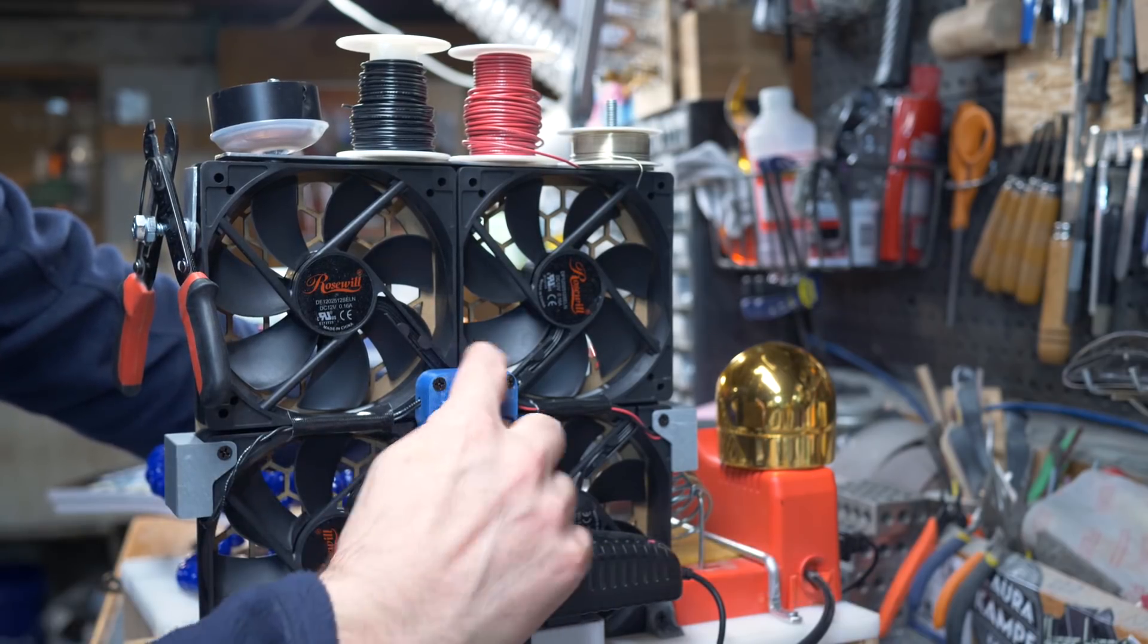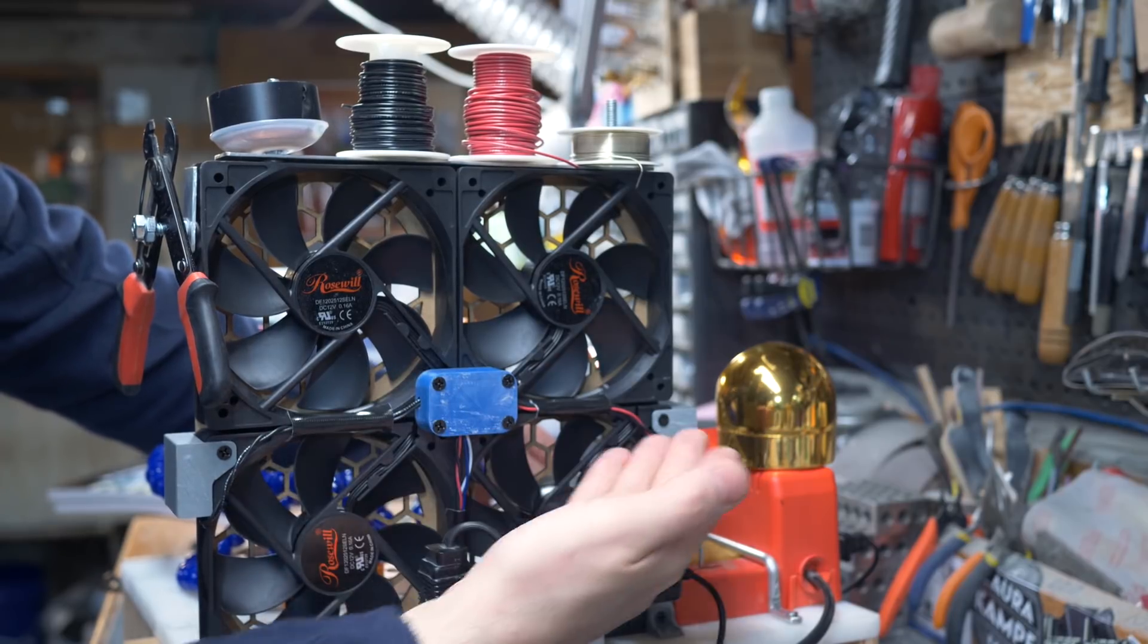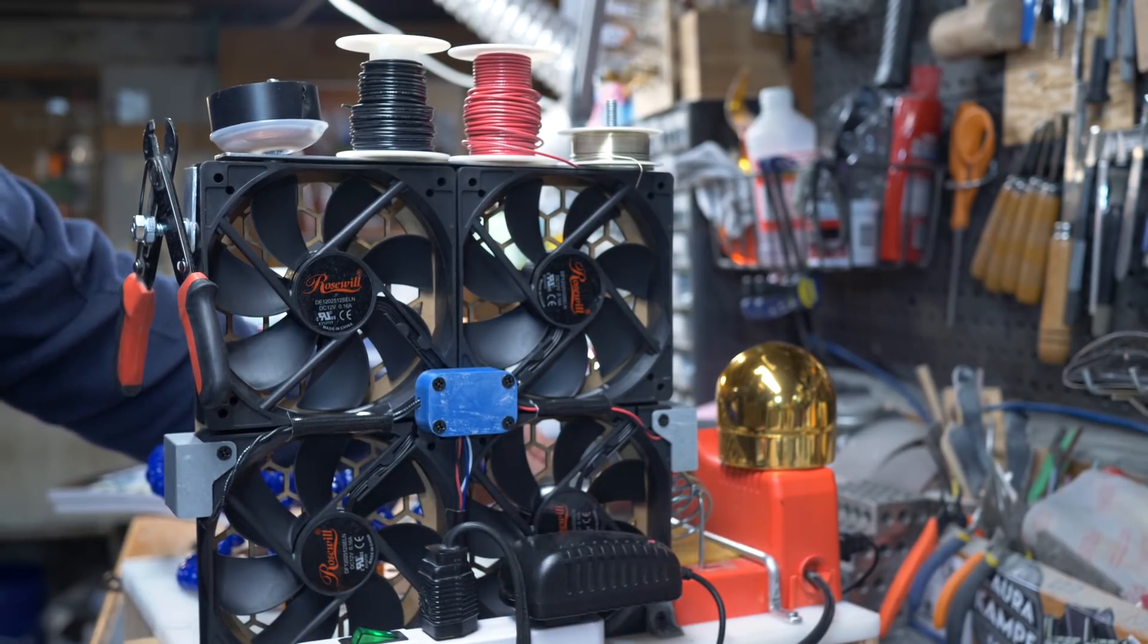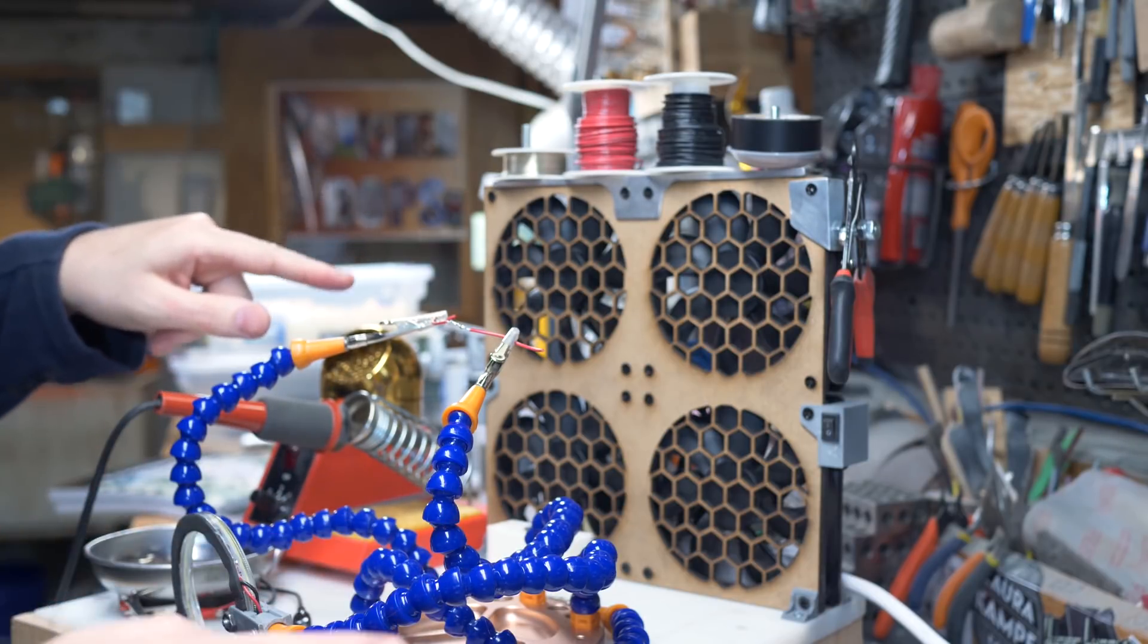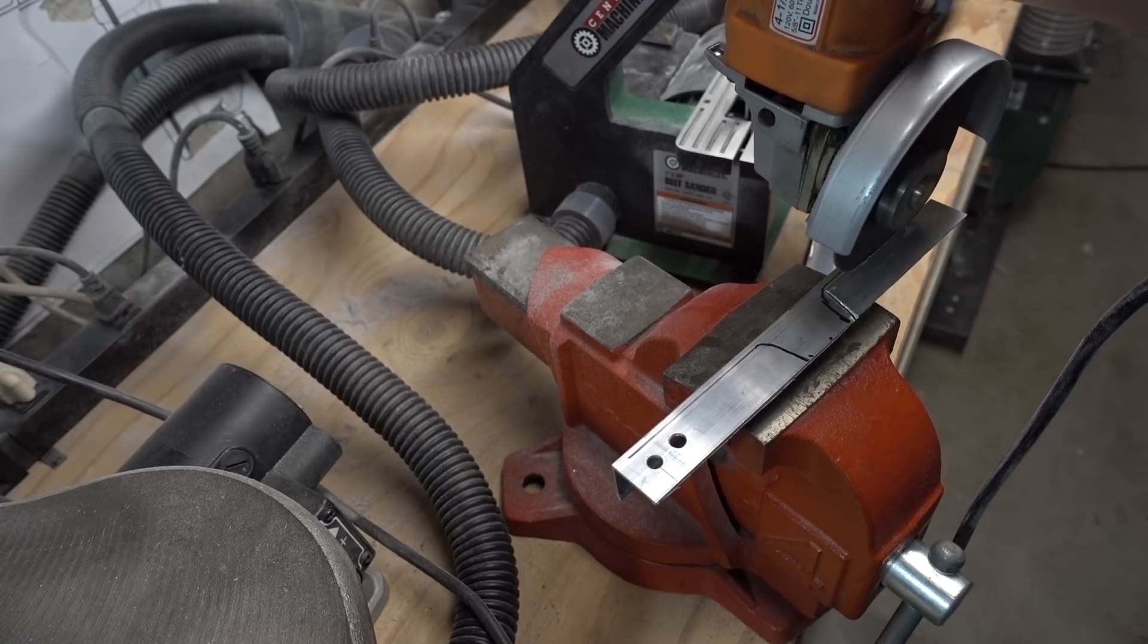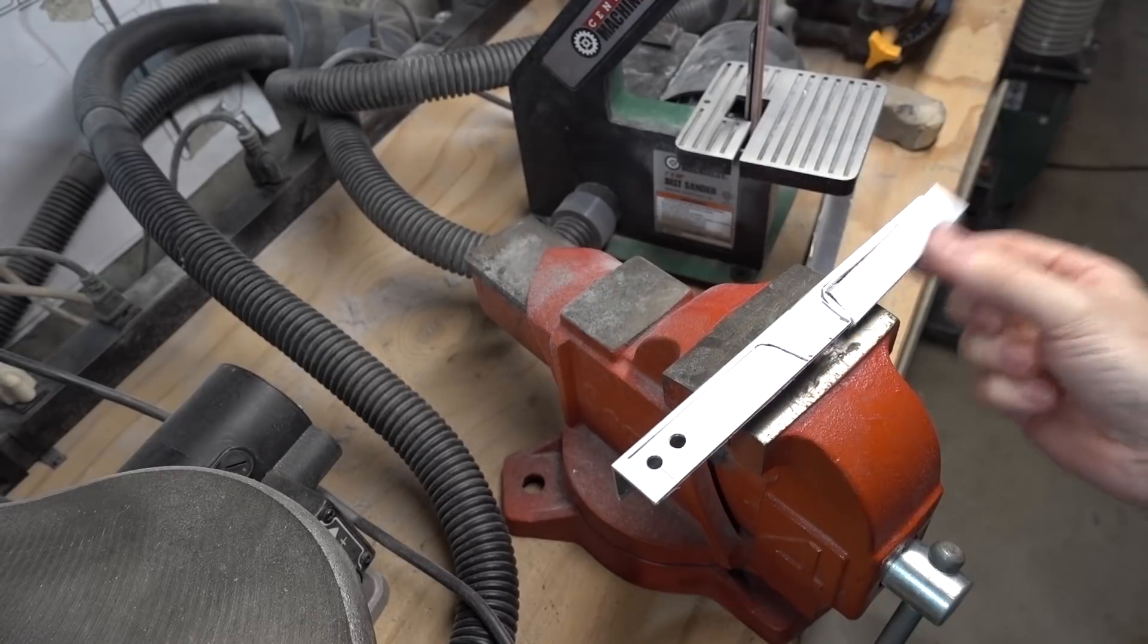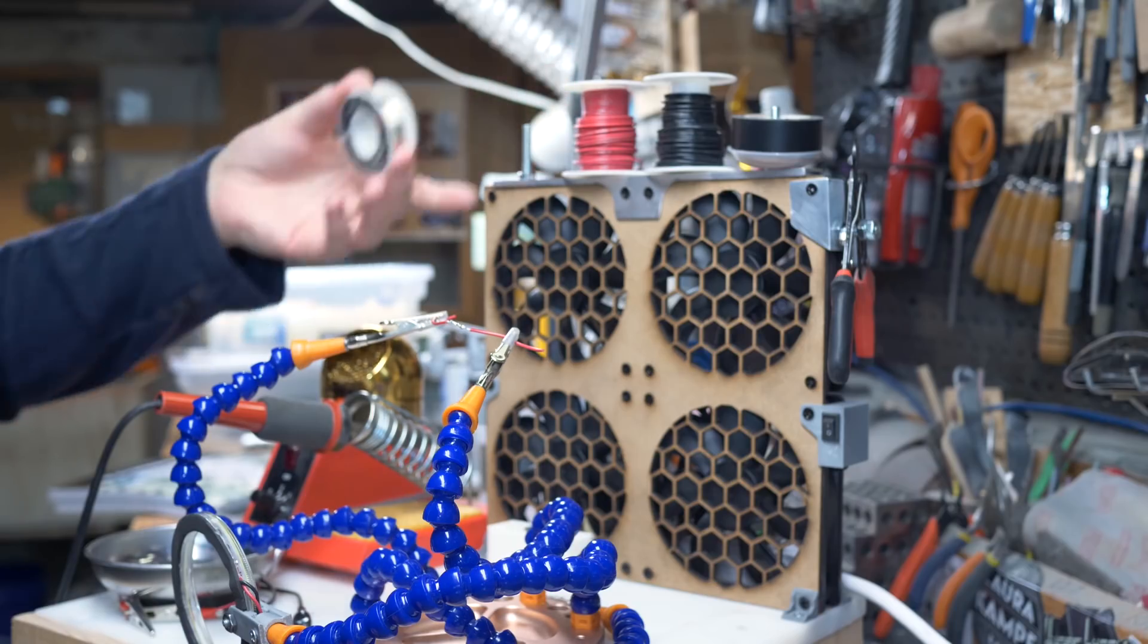And of course, on the back, I 3D-printed a little junction box to keep everything nice and clean. I wanted to make sure that this thing had everything I needed to solder, so I built a bracket here out of a piece of aluminum that's got some screws driven through it to hold my solder.